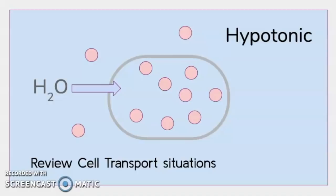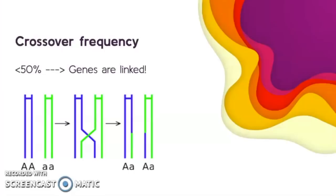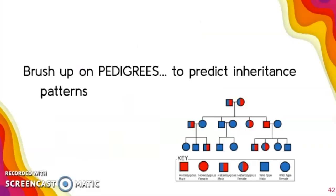You might want to review your cell transport situations, hypotonic environments, hypertonic environments, how those can occur in nature. If you're talking about genes, a crossover frequency of less than 50% means our genes are probably linked. One last thing to brush up on are pedigrees. Those could be a common question that could show up. Be able to look at a pedigree and predict an inheritance pattern in genetics.